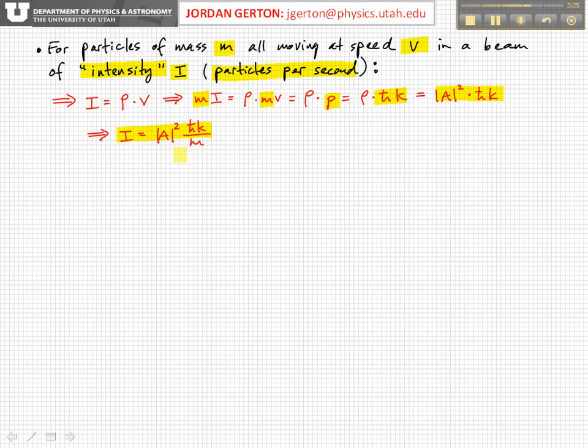And so for a particular experiment in these unbound state geometries we're indicating here, if you know the intensity of the beam—that is, if you know the number of particles per unit second going past a particular point in the beam—then that allows us to find the amplitude coefficient for a plane wave that describes that beam.